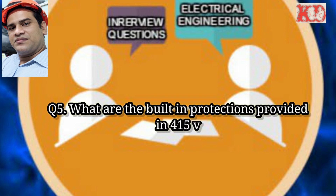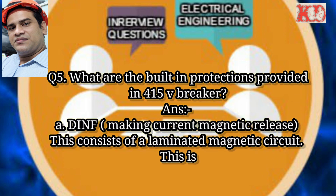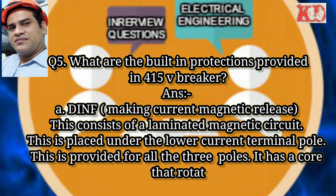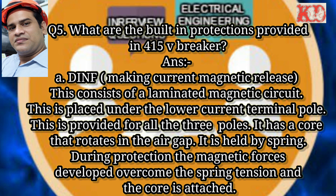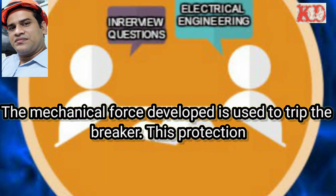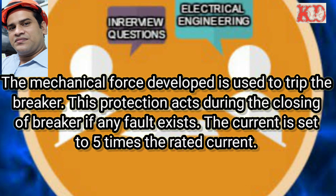Question number five: what are the built-in protections provided in a 415V breaker? Answer — first, DINF: DINF is making current magnetic release. This consists of a laminated magnetic circuit placed under the lower current terminal pole, provided for all three poles. It has a core that rotates in the air gap, held by a spring. The magnetic forces developed overcome the spring tension, and the core is actuated. The mechanical force developed is used to trip the breaker. This protection acts during the closing of the breaker if any fault exists. The current is set to five times the rated current.